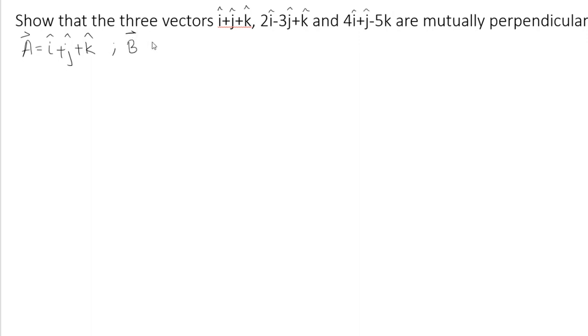And I give the name B for the second vector 2i-3j+k, and the third vector is C = 4i+j-5k. Then I need to show that A, B, and C are perpendicular. So it means that I can find the scalar product between them.